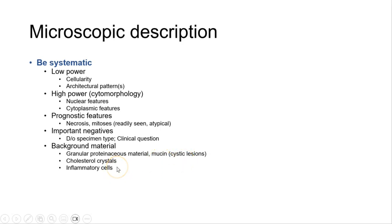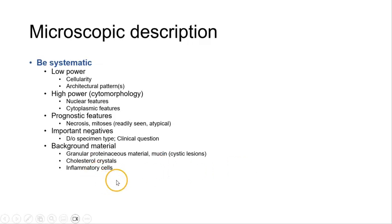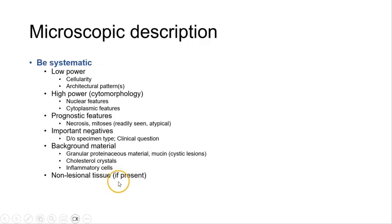Also, if we see cholesterol crystals, this usually indicates that we may be dealing with a cystic lesion, along with the presence of inflammatory cells, etc. If non-lesional tissue is present, I also tend to include it for completeness of the report.